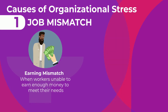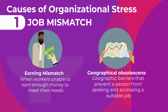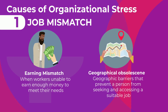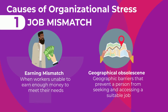Another example is earning mismatch. This is when workers are unable to earn enough money to meet their needs. Lastly is geographical obsolescence. It is a geographic barrier that prevents a person from seeking and accessing a suitable job.